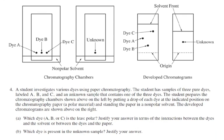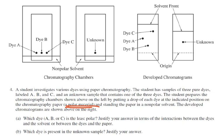Looking at the question: a student investigates various dyes using paper chromatography. The student has samples of three pure dyes labeled A, B, and C, and an unknown sample that is one of those three dyes. The student prepares the chromatography chambers by putting a drop of each dye at the indicated position on the chromatography paper — a polar material, that's critical — standing in a non-polar solvent. The developed chromatograms are shown on the right.